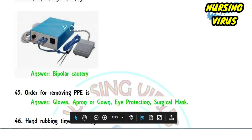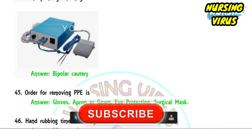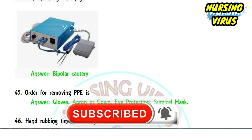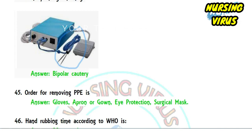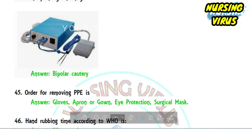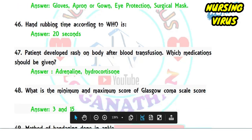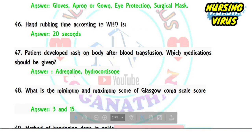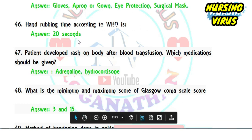Question 44 was another image-based question identifying a bipolar forceps, which is commonly used during surgery. Question 45: the correct order for removing personal protective equipment is — gloves first, then apron or gown, followed by eye goggles, then surgical mask, and finally hand washing.